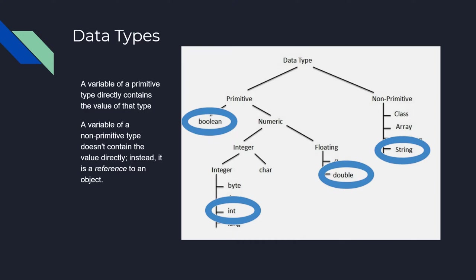So essentially, there are many data types, but we're going to be going over the four main ones: boolean, integer, double, and string, each within their own respective categories. Remember, data types specify the size and type of values that can be stored within an identifier.